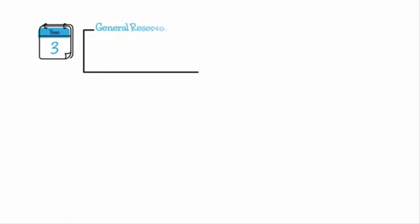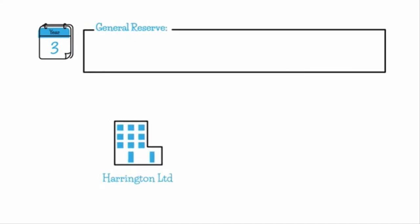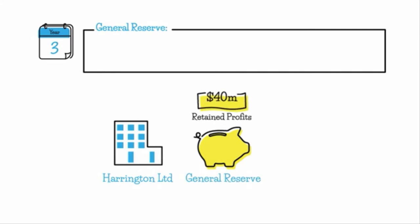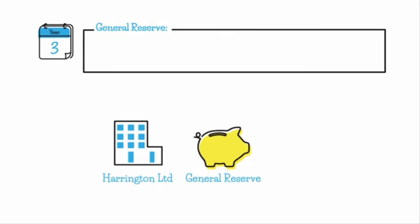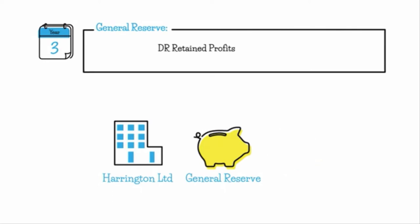In year three, Harrington Limited's directors resolve to create a general reserve account using $400 million from retained profits. Directors can create a reserve account at any time, typically through a transfer from retained profits or from another reserve account. We debit retained profits — an equity account — by $40 million and credit general reserve $40 million to create that account.